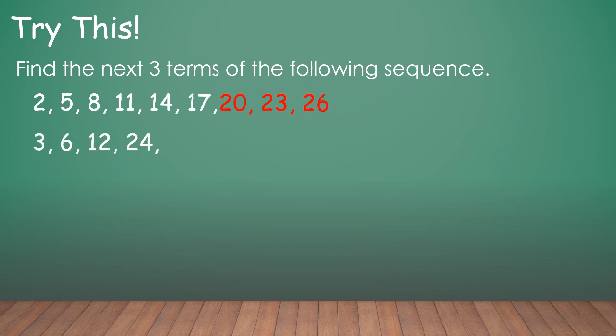Let's have the next one: 3, 6, 12, 24. So what will be the next 3 terms? That will give us 48, 96, 192. So the pattern here is multiplying by 2. Next: 2, 3, 5, 8, 12, 17. What will be the next 3 terms? So that will give us 23, 30, 38. So why?